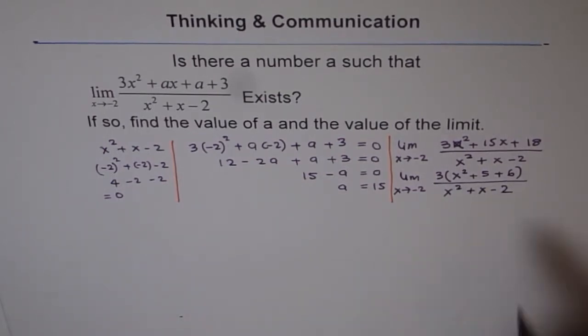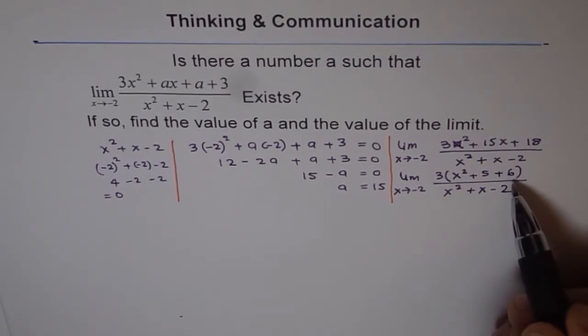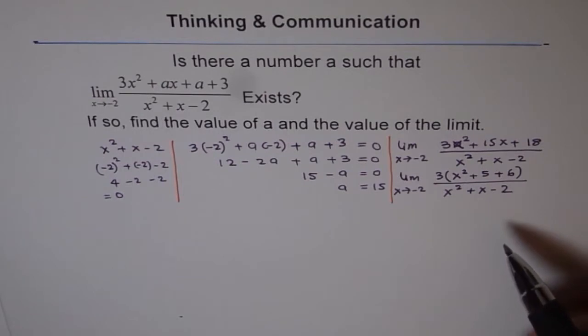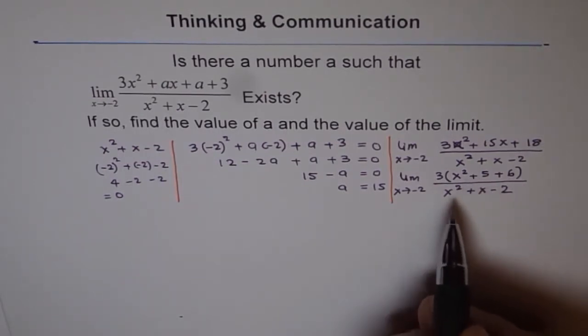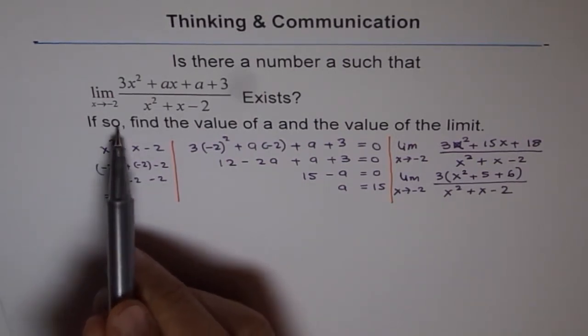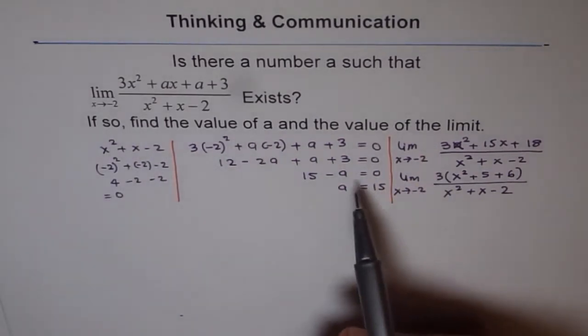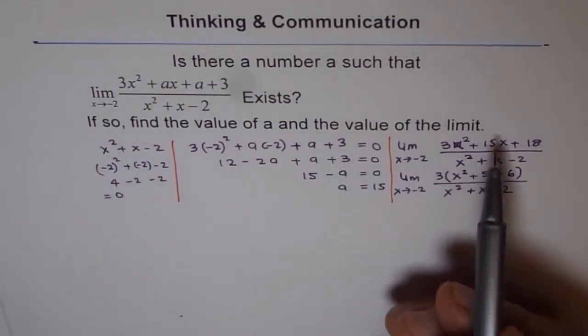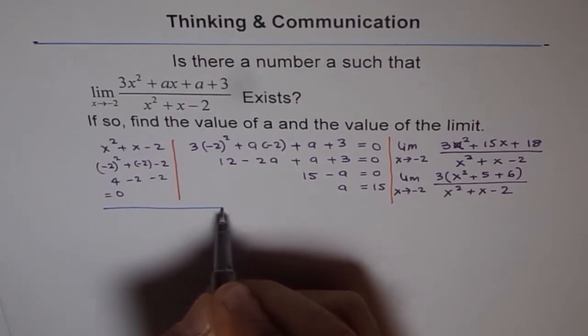That's good. Now, we can factor easily. We need product of 2 numbers as 6 and the sum as 5. So, the number is 3 times 2. Great. So, let me take this question from this side now onwards. We will do the second part which is if so, find the value of a. Well, we found the value of a and value of the limit. So, let's try to find the value of the limit.